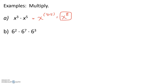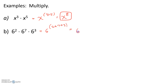Our next example, we have 6 to the 2nd power times 6 to the 7th power times 6 to the 3rd power. When multiplying exponents with the same base, we keep the base and add the powers. So, we would add 2 plus 7 plus 3. 2 plus 7 is 9, and 9 plus 3 is 12. This is 6 to the 12th power.